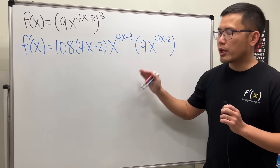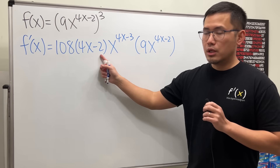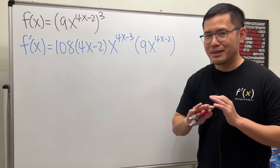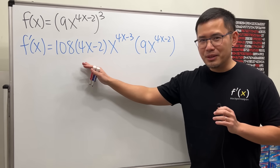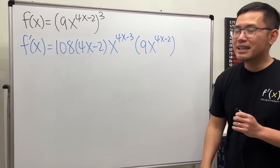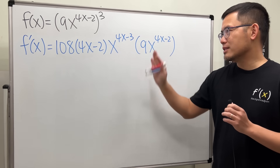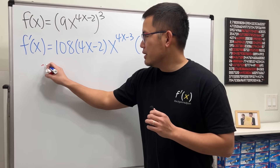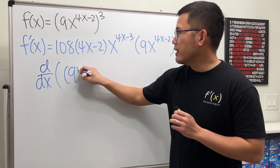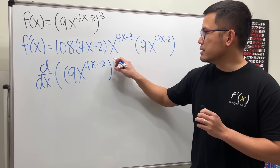I'll tell you right away this answer is incorrect. You see, we have the 4x minus 2 — we could factor out a 2, but that's not the main issue. The main issue is the calculus, not just the algebra. Let me show you what I think happened. It looks like we are trying to differentiate the function 9x to the power (4x minus 2), and then raise that to the third power.